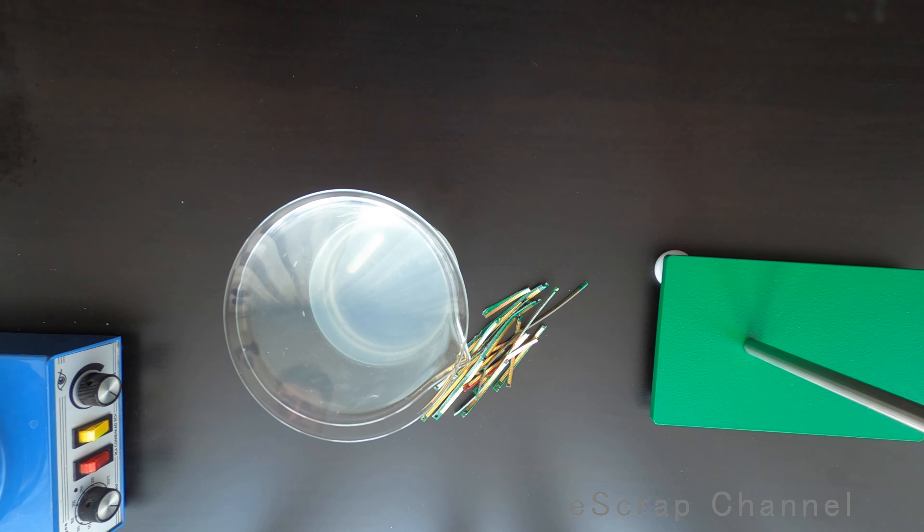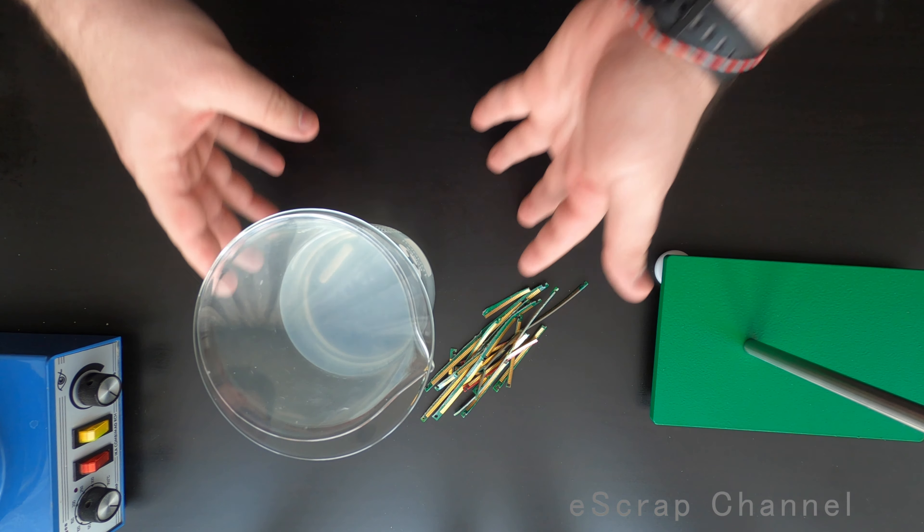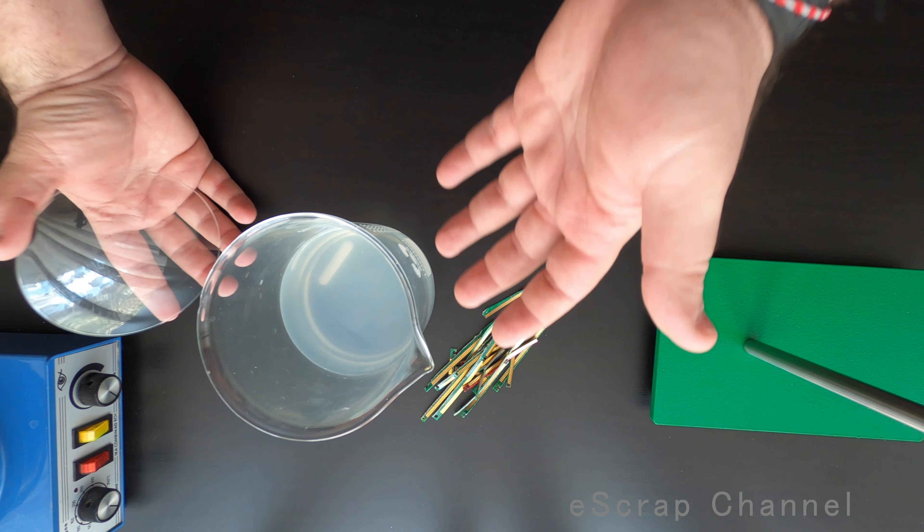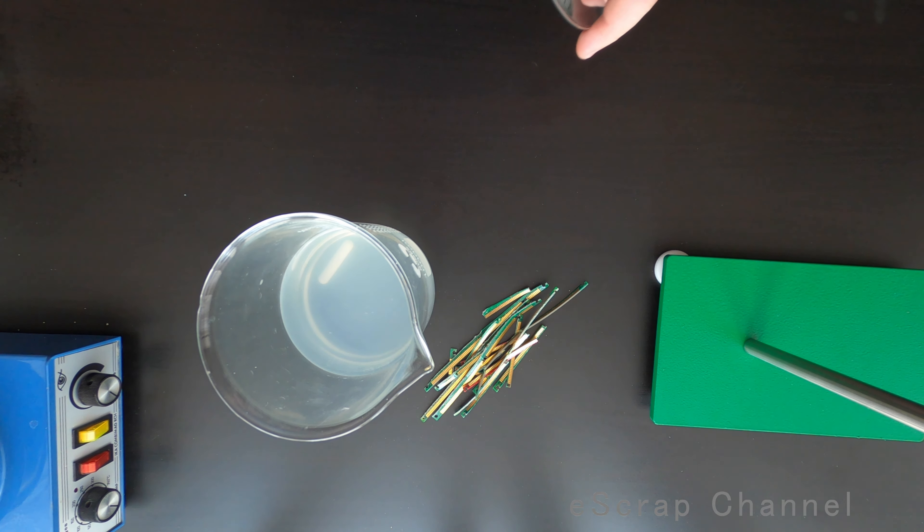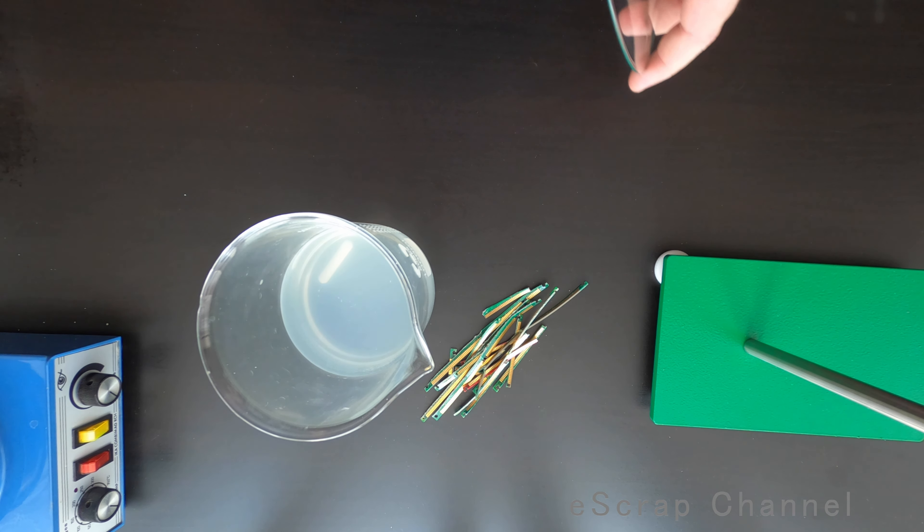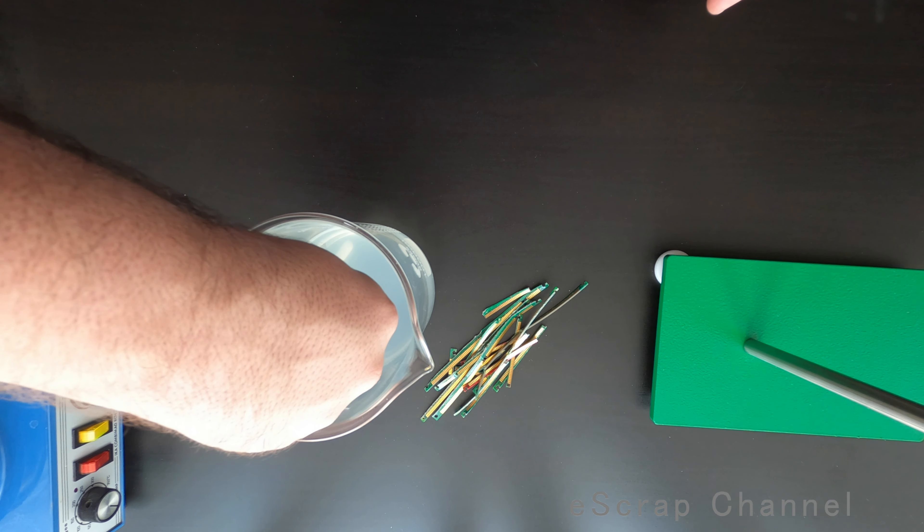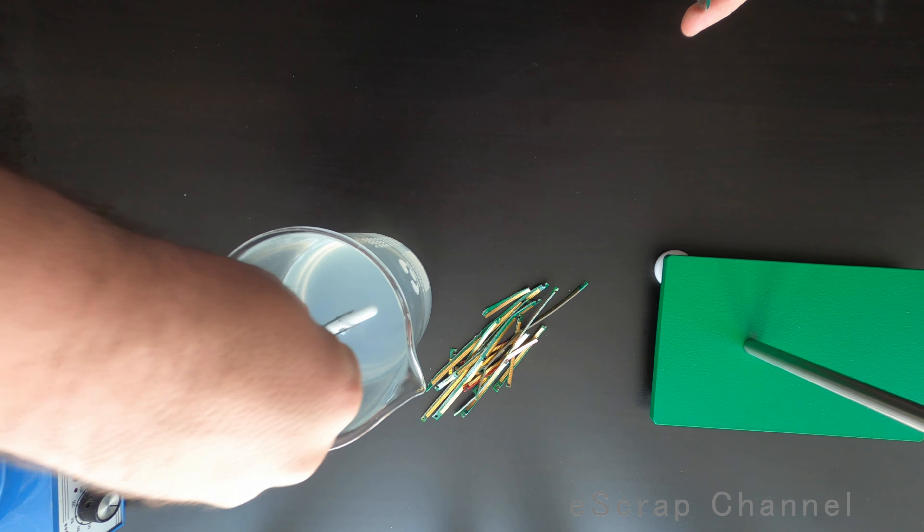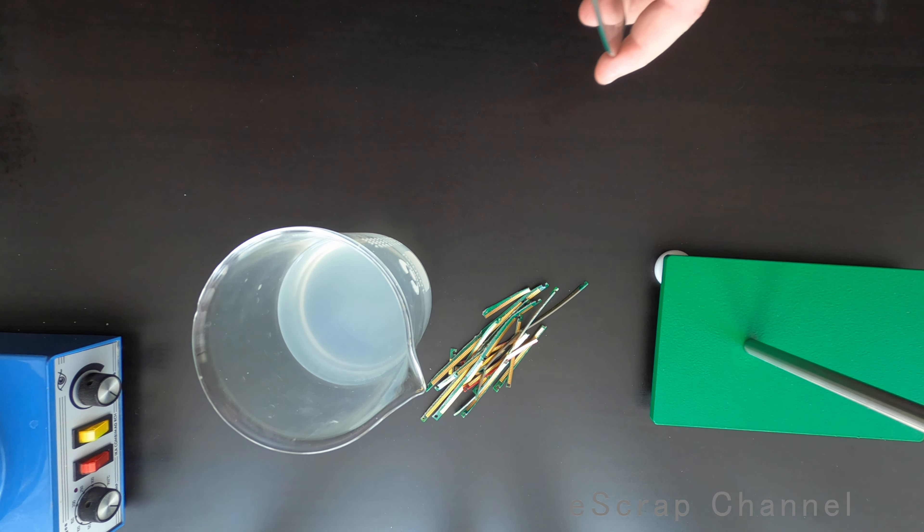Five minutes later, I'm ready with my solution. What I have in this beaker: I have citric acid, I have table salt, I have hydrogen peroxide from the pharmacy three percent, and tap water.